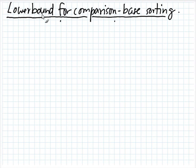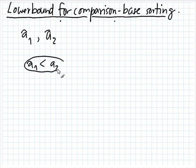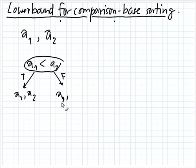Suppose we only have two numbers, A1 and A2. How can we sort these two numbers? It's easy — we make a comparison: is A1 less than A2? If this is true, then the sorted solution is A1, A2. Otherwise, the solution is A2 then A1. If you want to do comparison-based sorting, you cannot sort two numbers without making any comparisons — you need to compare them.